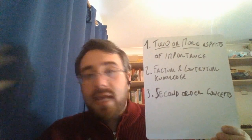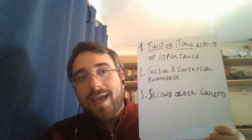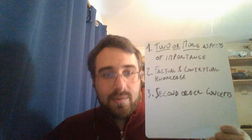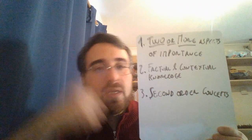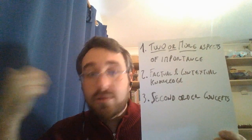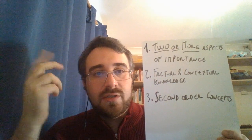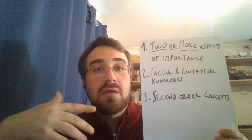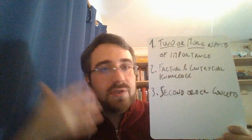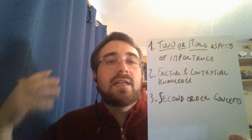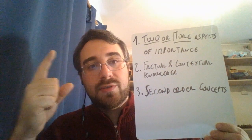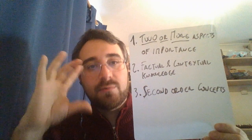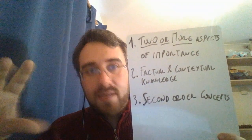Factual knowledge again — names, dates, and facts, as many as you can, connected to the question. Be very specific. Finally, second order concepts such as chronology — putting things in the right context — causation and consequence, knowing what caused certain things and what was the impact of those things, and finally significance. There are other second order concepts too; if you don't know what a second order concept is, go to the GCSE revision guide where you'll find all the information.